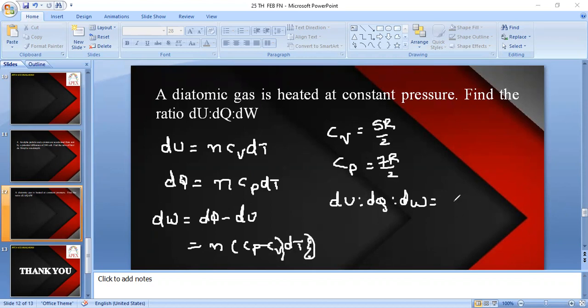So the remaining values are: for dU it is Cv, for dQ it is Cp, and for dW it is Cp minus Cv. So this will be, Cv value is 5R by 2, this is 7R by 2, and 7R by 2 minus 5R by 2.